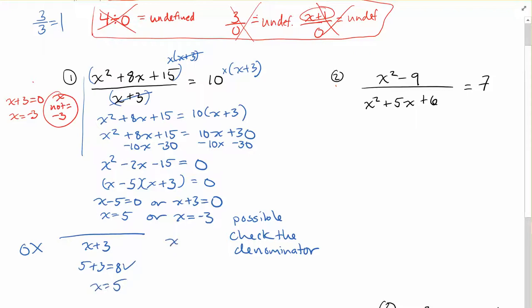But over here, if I had x + 3 and I substitute in that -3, I get -3 + 3. That's equal to 0. Bad idea. So it cannot be -3. So x = 5. Only solution would be what you would write.